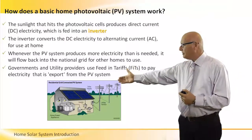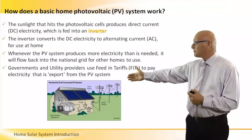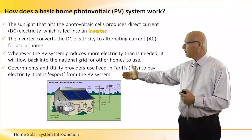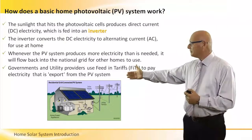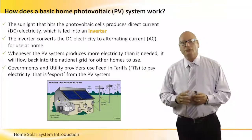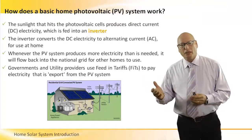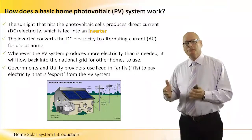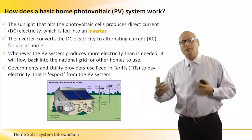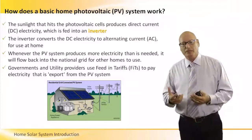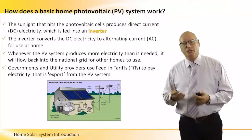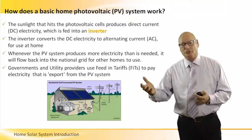We can see the inverter under the roof. The inverter, as we said before, converts the DC electricity to alternating current for use at home. Whenever the PV system produces more electricity than the home needs, it will flow back into the national grid for other homes to use.